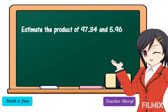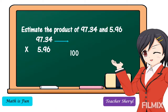Next example: estimate the product of 97 and 34 hundredths and 5 and 96 hundredths. To get the answer, first we're going to round our factors to the nearest whole number. For our first factor, 97 and 34 hundredths — is this closer to 90 or closer to 100? All right, 97 and 34 hundredths is closer to 100. How about 5 and 96 hundredths? Is this decimal number closer to 5 or closer to 6? All right, 5 and 96 hundredths is closer to 6.